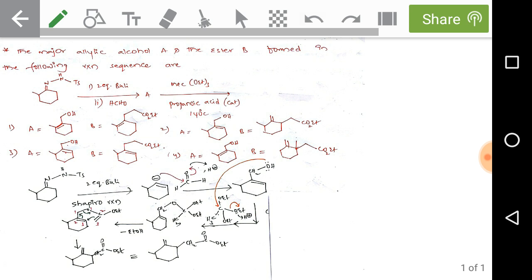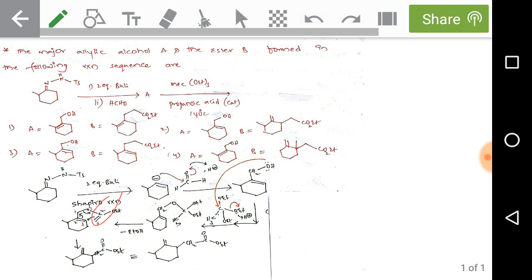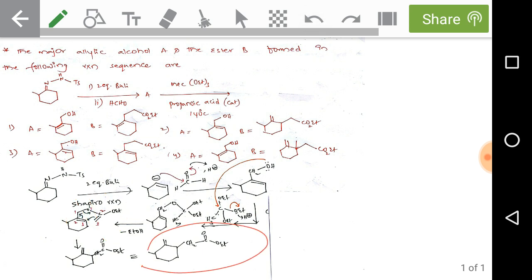Product A reacts with triethyl orthoformate in the presence of propanoic acid as catalyst, which provides a proton. The lone pair on oxygen attacks the ethoxy carbon, cleaving ethanol. The oxygen of the intermediate attacks the carbon to cleave another ethanol, forming a double bond. This sets up a [3,3]-sigmatropic rearrangement at 140°C under thermal conditions. Numbering one-two-three and one-two-three, the [3,3]-sigmatropic rearrangement gives the final product B. Option 2 is the correct answer.